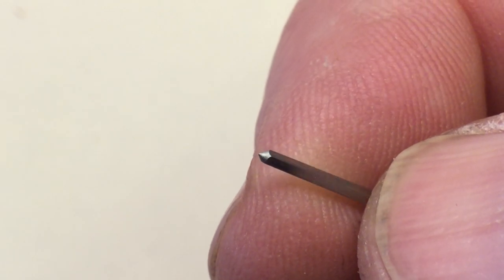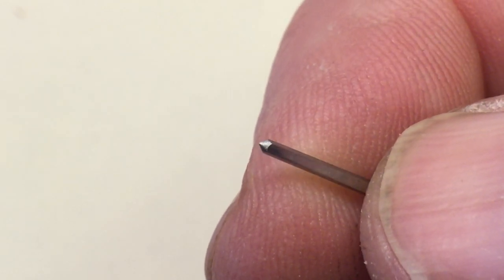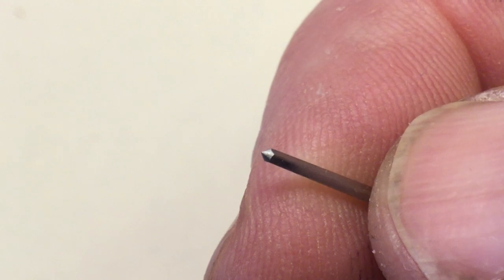This was done simply by holding the brooch at a 45 degree angle, and twirling it in my fingers, whilst drawing it down a large diamond hone.